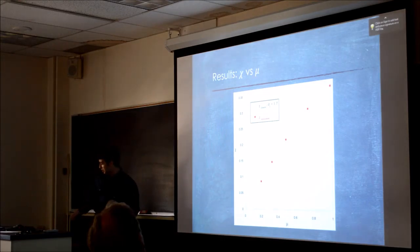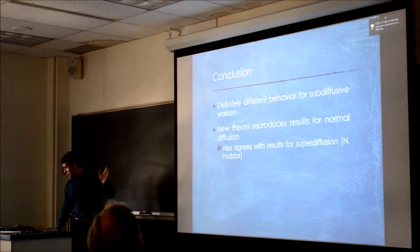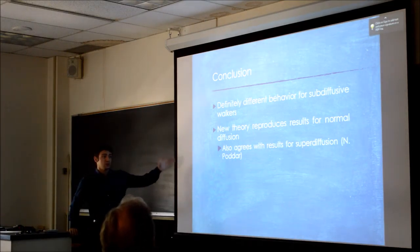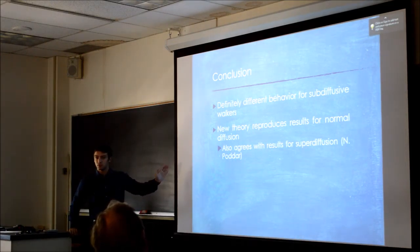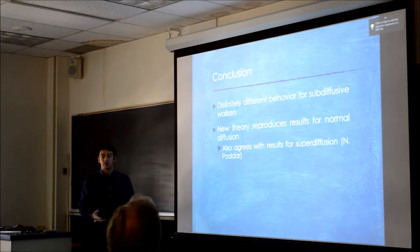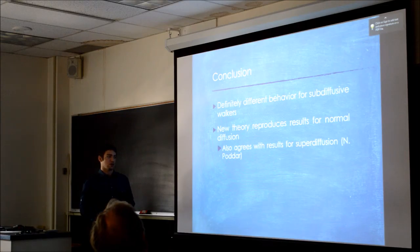And what's especially exciting about this, which leads over to the conclusion—what's especially exciting about this is that this theory reproduces the results for normal diffusion, so it works for what we did before. And it also seems to be reproducing the results we're getting for super diffusion. So this is great because potentially we have this theory that describes all the different kinds of diffusion in terms of the chi.